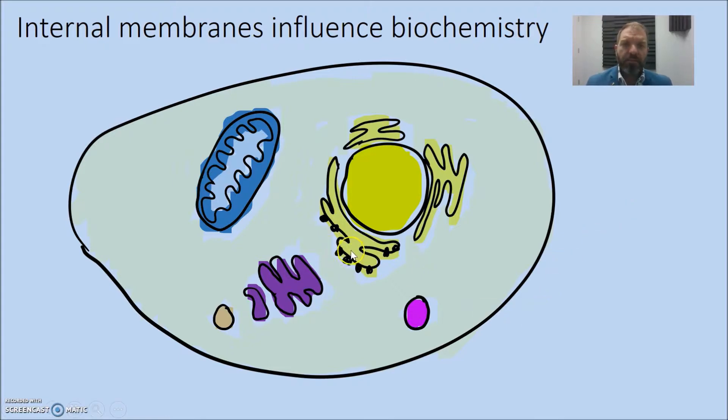For example, in the rough ER, we're making protein. In the lysosomes, we're degrading protein. Those two sets of enzymes are obviously having opposite reactions and need to be kept separate from each other.